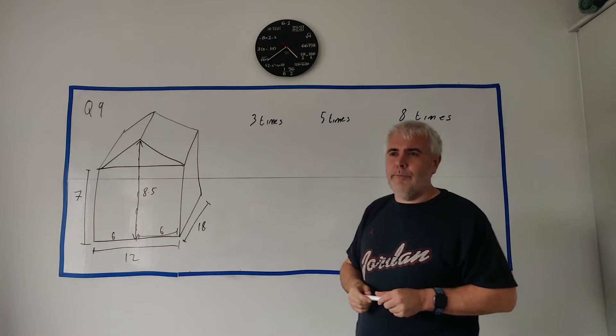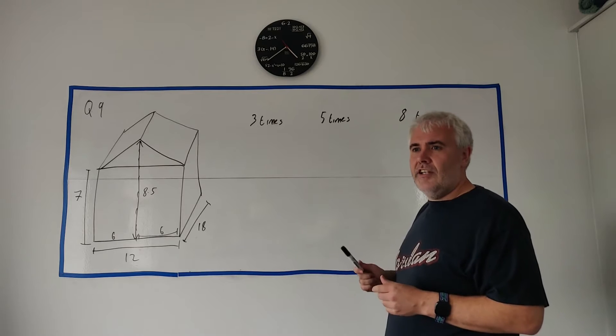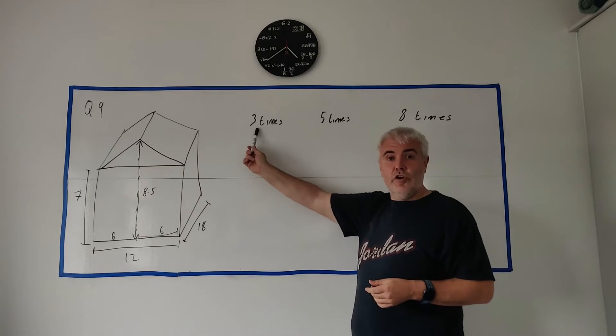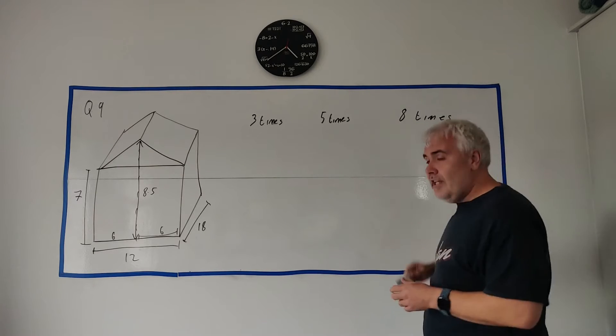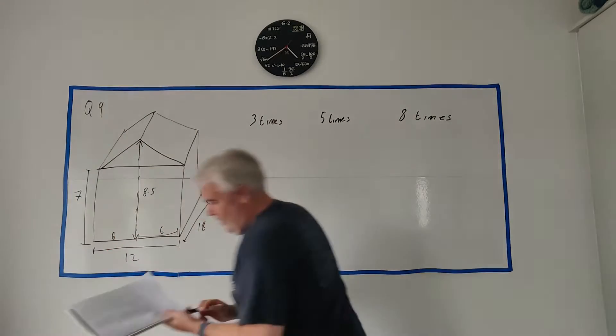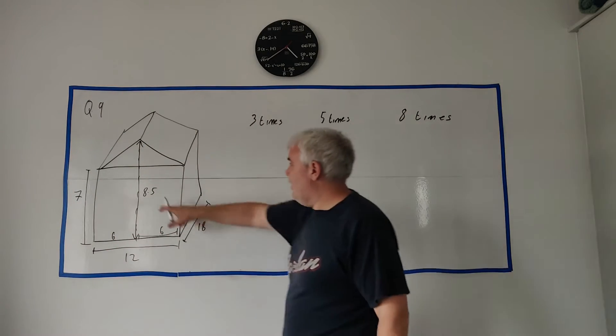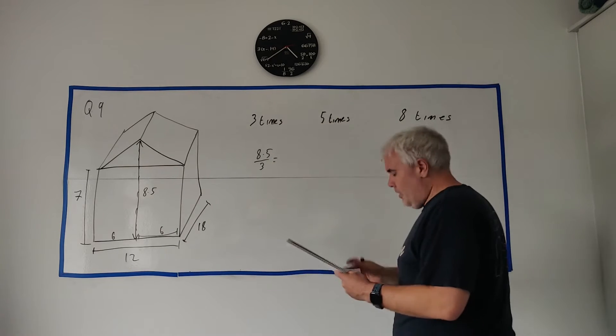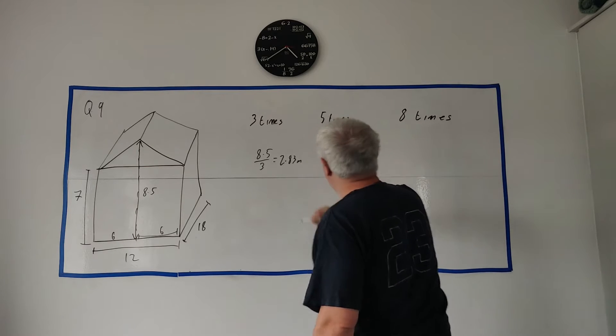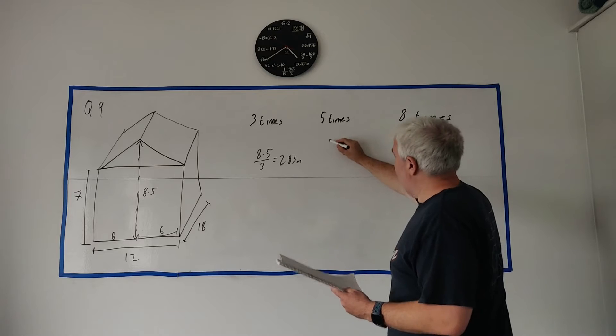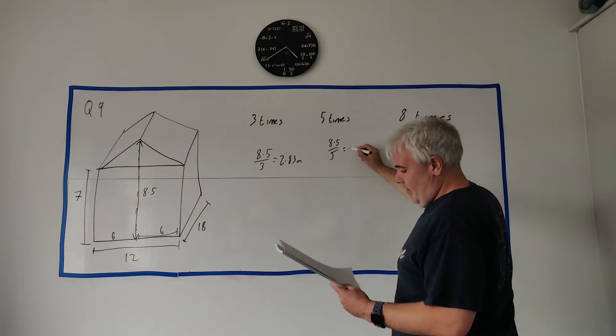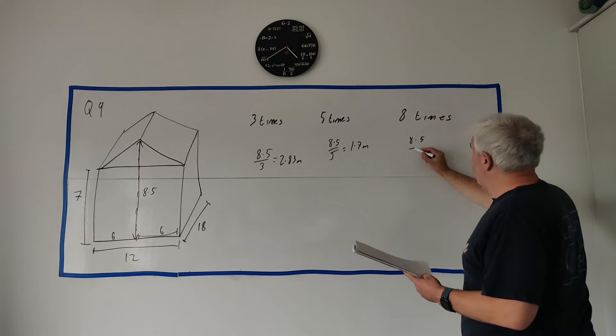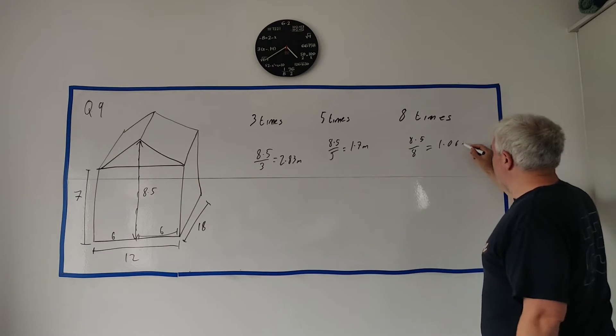So they ask us, is the height of the shed, which is the most likely of these multiple choice? Is the height of the shed three times as high as Sean, five times as high as Sean, or eight times as high as Sean? Well, we can simply do that by getting the height of the shed, 8.5, and dividing by three, which gives me 2.83 metres. Divided by five, 8.5 divided by five is equal to 1.7 metres, and 8.5 divided by eight is equal to 1.06 metres.